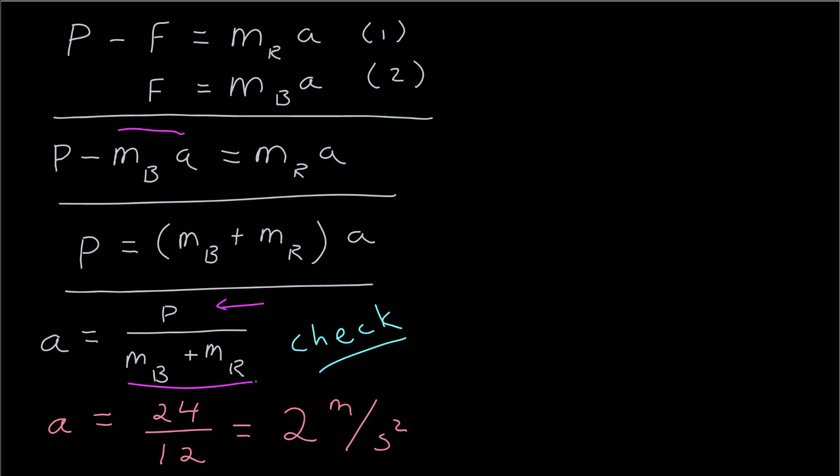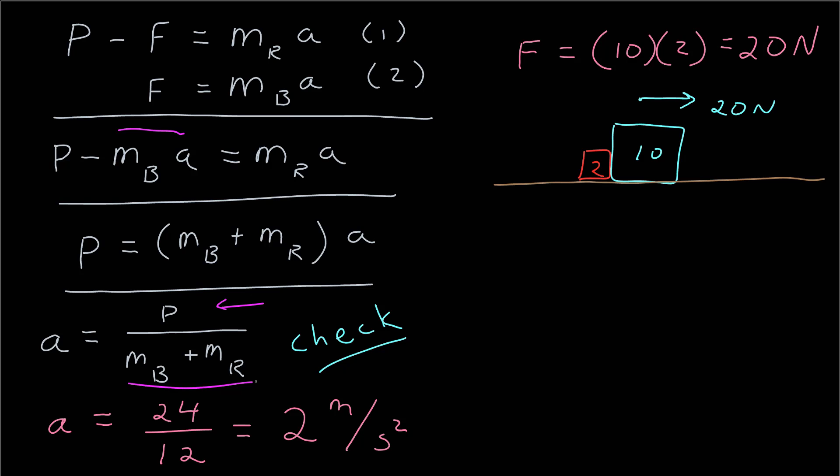Now I can solve for the magnitude of the contact force. Using equation two, the force equals the mass of the blue block times the acceleration — which gives 20 newtons. This makes sense: a 20-newton force applied to the 10-kilogram blue block produces a 2 meters per second squared acceleration.